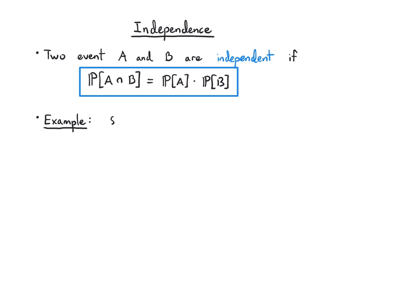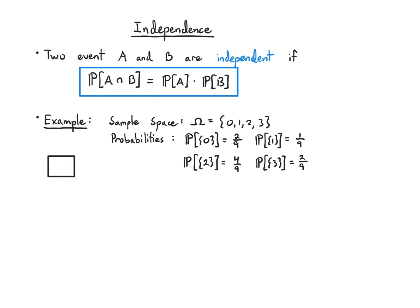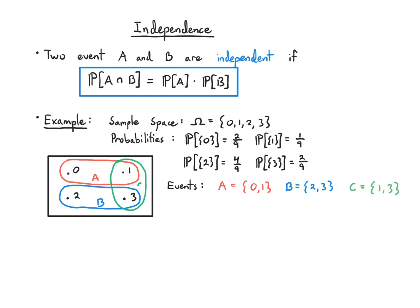Let's do an example. Our sample space is {0, 1, 2, 3} with probabilities: P(0) = 2/9, P(1) = 1/9, P(2) = 4/9, and P(3) = 2/9. Event A is {0, 1}, event B is {2, 3}, and event C is {1, 3}. The question is: are events A and B independent?